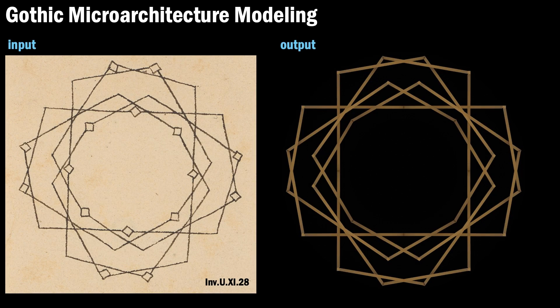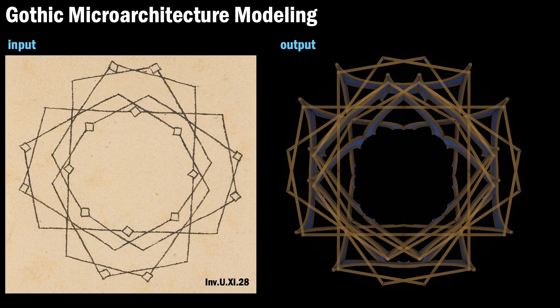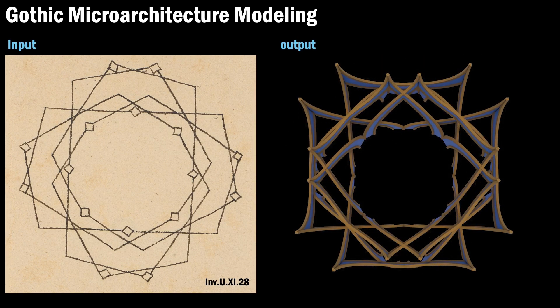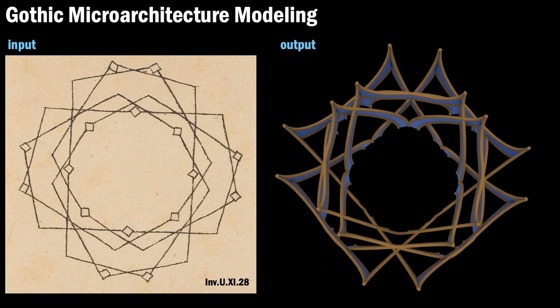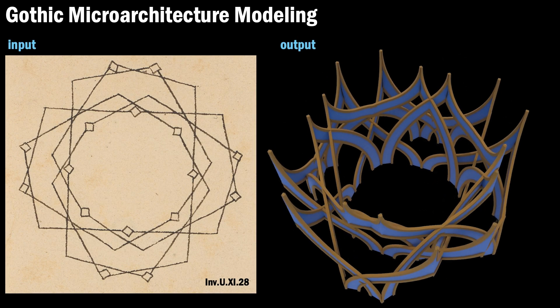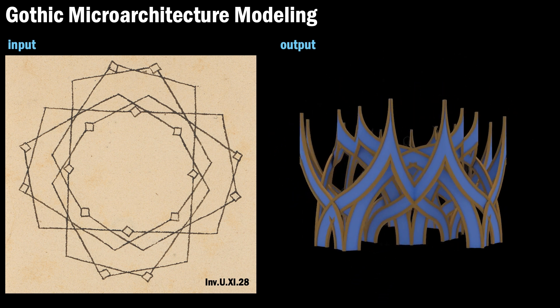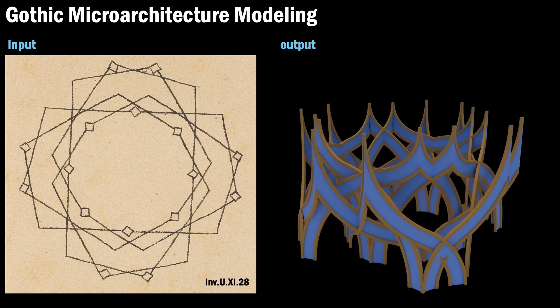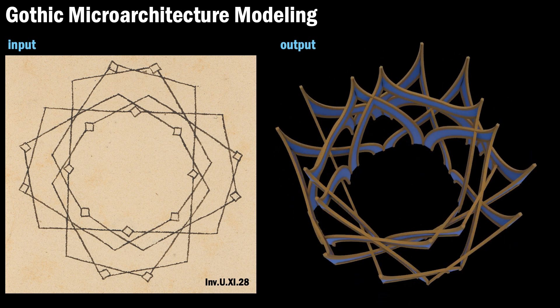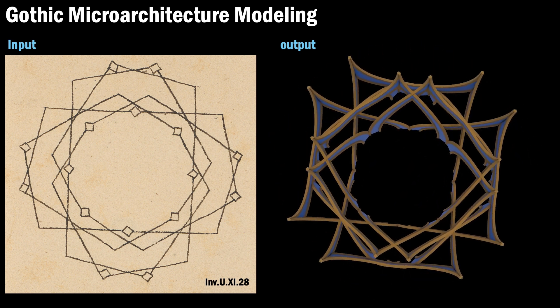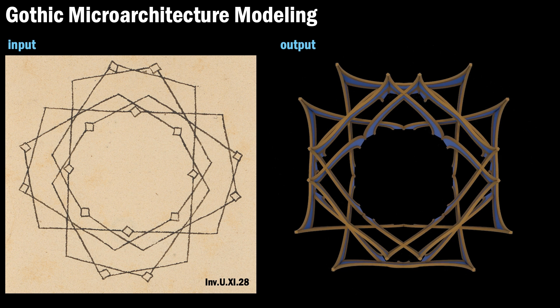In this work, we aim to mathematically formulate the geometric principles underlying the modeling of Gothic microarchitecture and develop an algorithm to reconstruct 3D structures from their 2D ground plans.